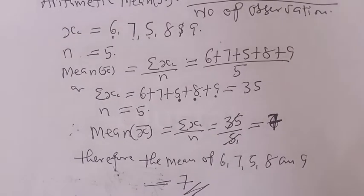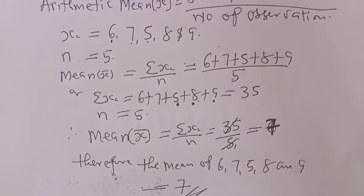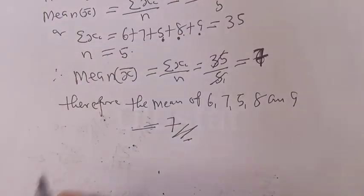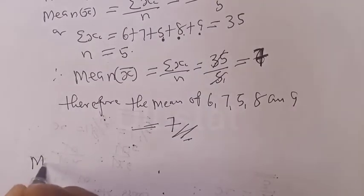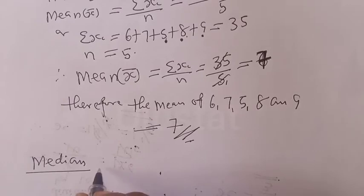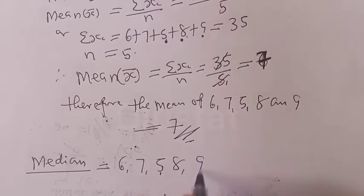Then from the question, let's quickly add this as a bonus: we can also find our median. Quickly find the median of the same set of numbers. To find the median, we have to rearrange the set of data in ascending order: 6, 7, 5, 8, 9. Let's rearrange in ascending order.